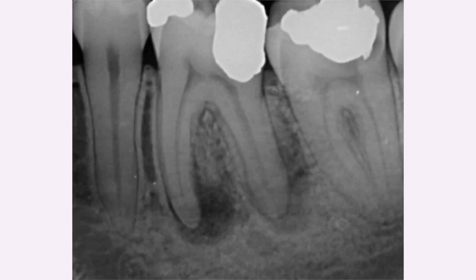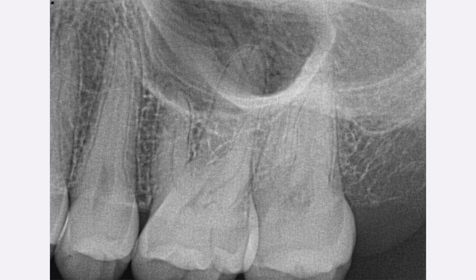Another negative radiolucency can be an infection. Here you can see at the tips of the roots there are black bubbles surrounding them — this is an infection or an abscess, and this tooth will often need a root canal to save it.